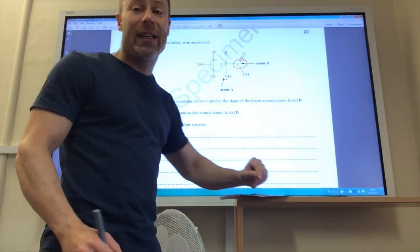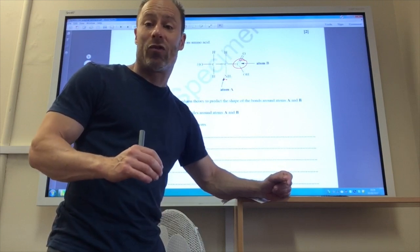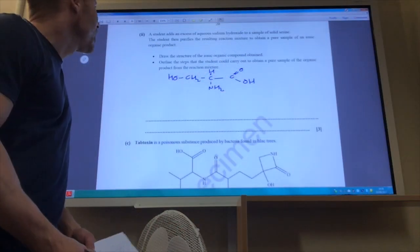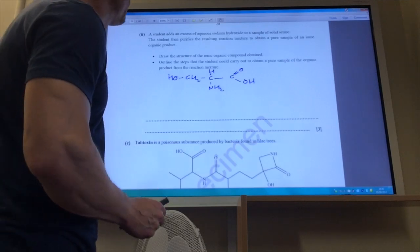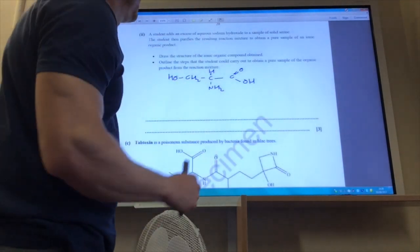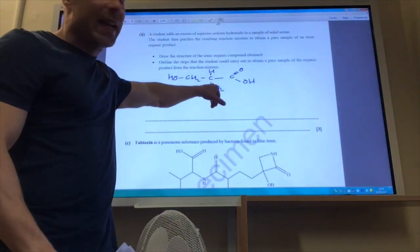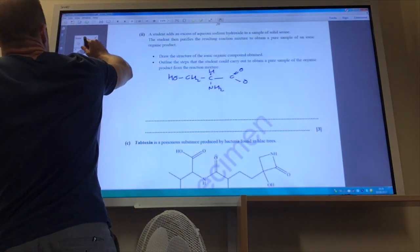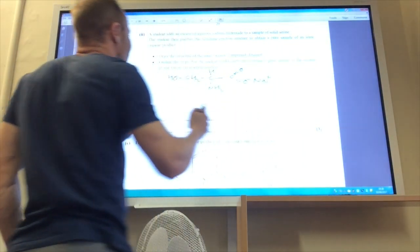For this carbon here, three bonding pairs, no lone pairs, therefore the shape will be trigonal planar and the bond angle will be 120 degrees. Part two: I'm going to add an excess amount of aqueous sodium hydroxide to a solid sample of serine, and it wants me to identify the product. I've drawn up serine here. Alcohol group is not going to react with sodium hydroxide solution, nor the amine group here. It will actually be the carboxylic acid group there that will go.